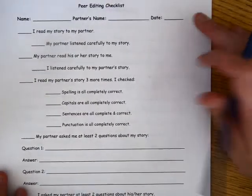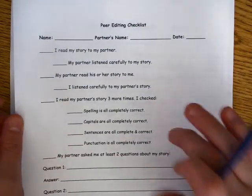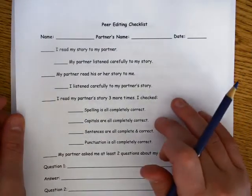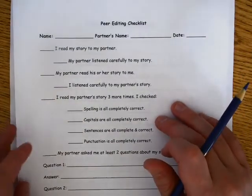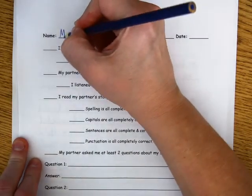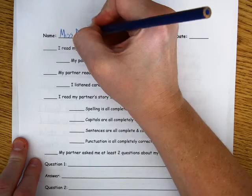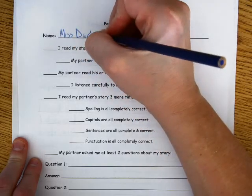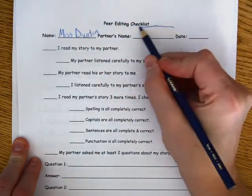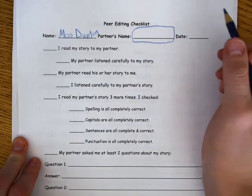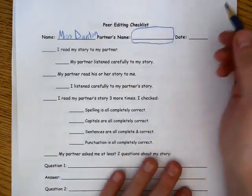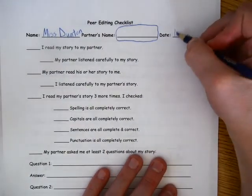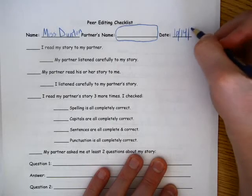The first thing you're going to do is write your name on your paper. Everyone will have one of these papers — it's not just one per group, it's one for every person. So I'm going to write my name, Miss Dunton. And then my partner's name — whoever my partner is, you have to write their name there. And the date is going to be 10-14-14.